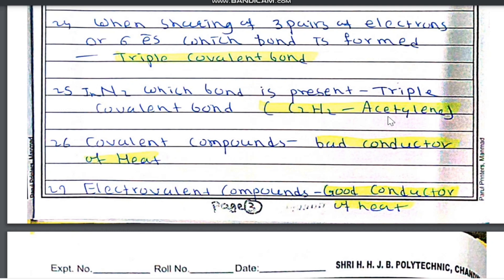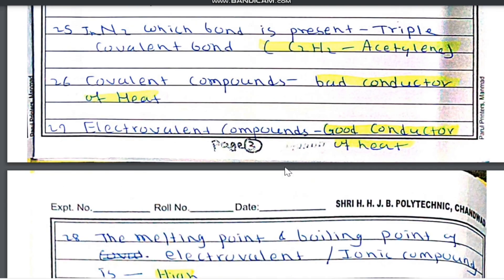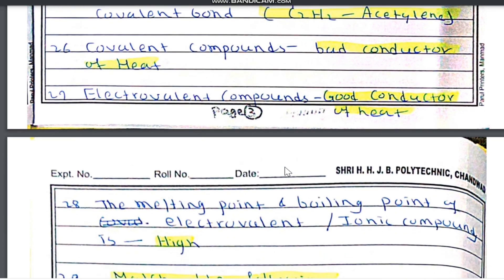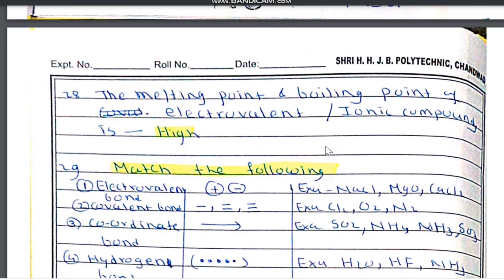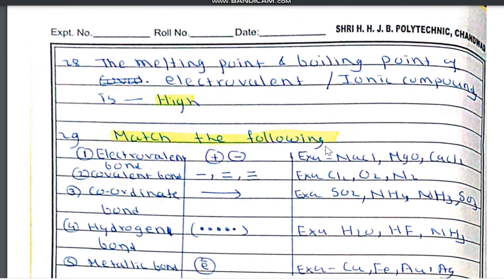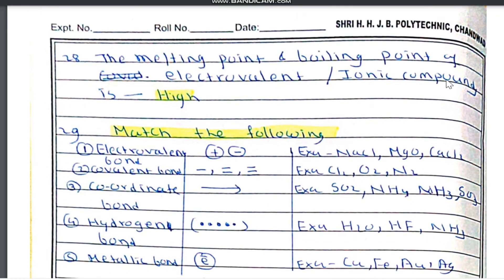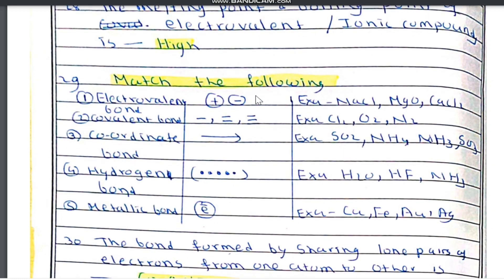Covalent compounds are bad conductors of heat, while electrovalent compounds are good conductors of heat. Question number 28: the melting point and boiling point of electrovalent or ionic compounds is high, while for covalent compounds it is low.